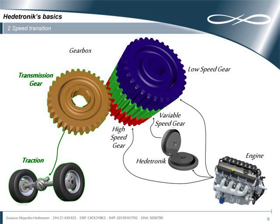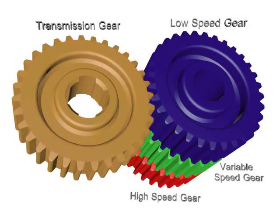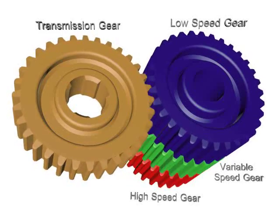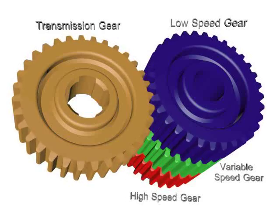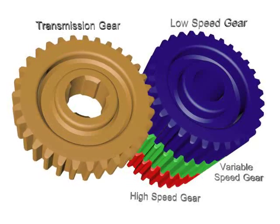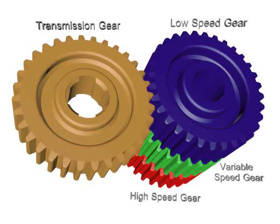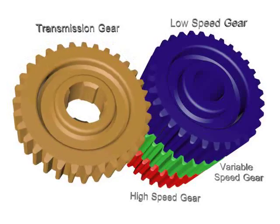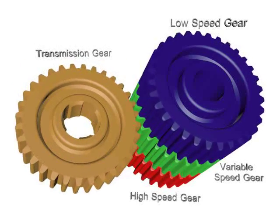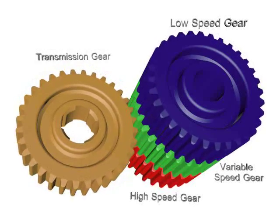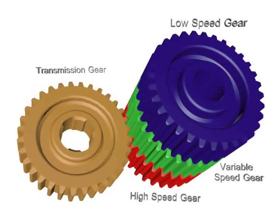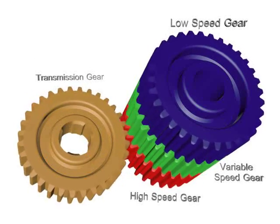Let's see these gears in motion. The brown or transmission gear is positioned on the blue gear, so the vehicle's speed will be low. When the green gear reaches the low speed, the brown gear can directly pass from the blue gear to the green gear. After this, the green gear smoothly increases its speed and reaches the red gear's speed, allowing the brown gear to pass from the green to the red gear.